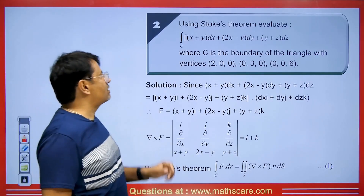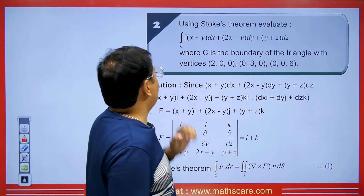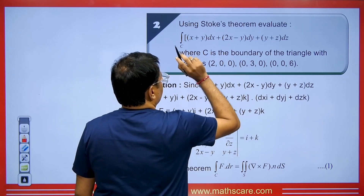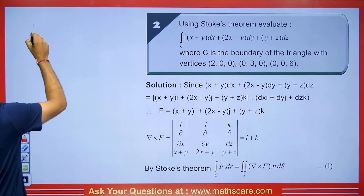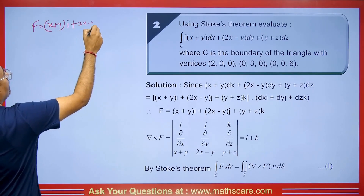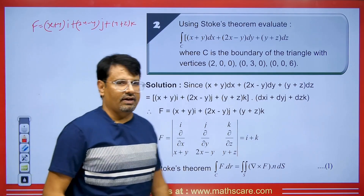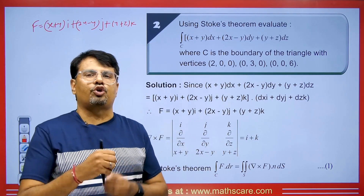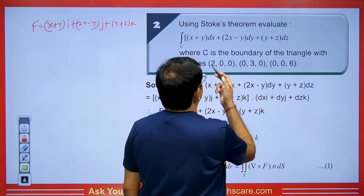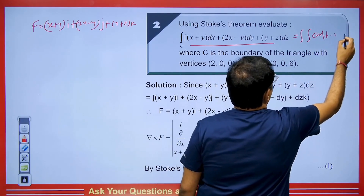Another question: use Stokes theorem to evaluate the line integral where c is the boundary of the triangle with vertices (2,0,0), (0,3,0), and (0,0,6). First we identify f from f dot dr by replacing dx with i, dy with j, and dz with k. Then the value of the line integral equals the double integration of curl f dot n ds.